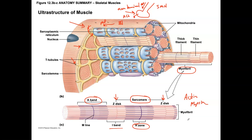A muscle cell will have many myofibrils made up of sarcomeres in order for contraction to take place. You'll also see mitochondria within muscle cells, which is really important for producing ATP, necessary for muscle function and muscle contraction. You'll also see sarcoplasmic reticulums, which are important for storing calcium, very important to skeletal muscle physiology. It's important to understand these anatomical structures so that you can make sense of what's taking place.